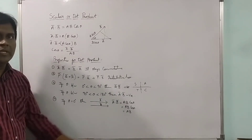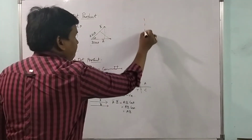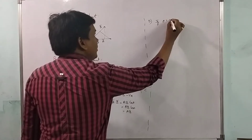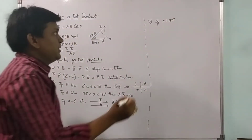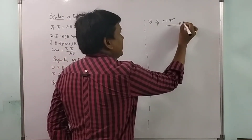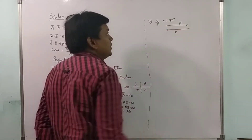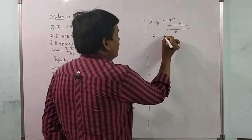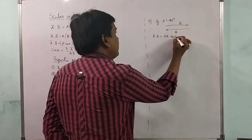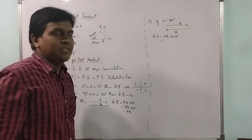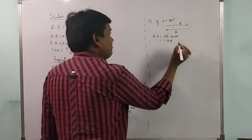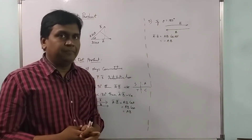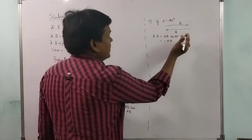Fifth point: if theta equals 180 degrees, that means vector a-bar and vector b-bar are in opposite directions. Then a-bar dot b-bar equals a·b·cos(180) equals a·b·(−1) equals −a·b. We get the maximum magnitude but with a negative sign because both vectors are in opposite directions.